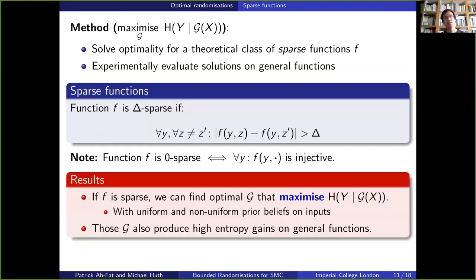Well, based on that theoretical definition, we can find approximations g that optimally randomize sparse functions f. So we managed to solve a simpler problem. Moreover, although the notion of sparse functions is mainly of theoretical interest, we show you that these solutions g also produce high entropy gains on general functions f.